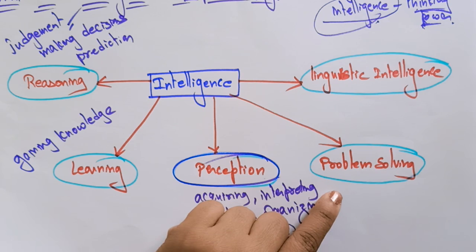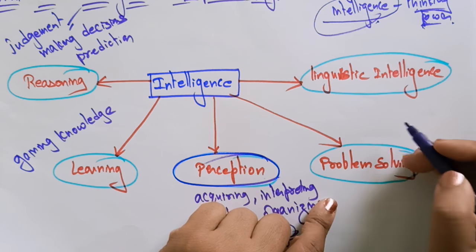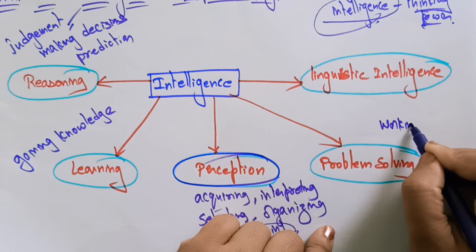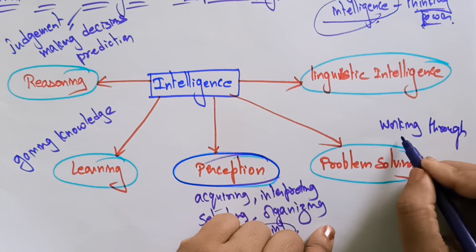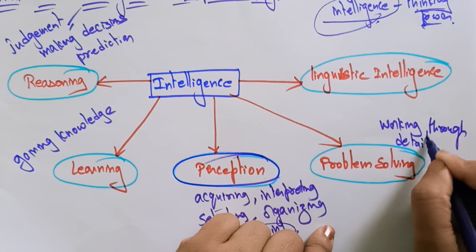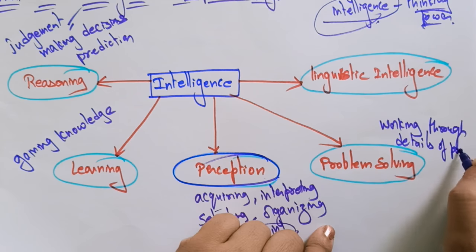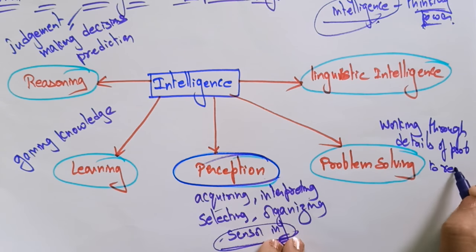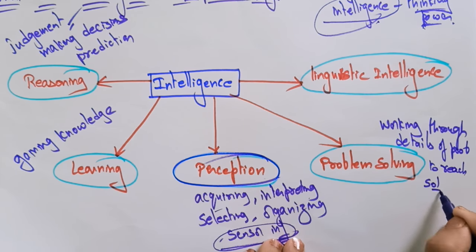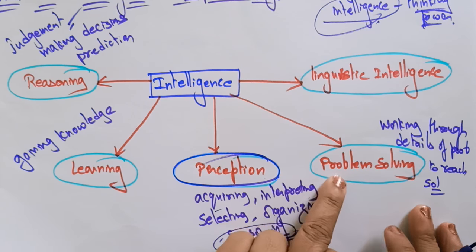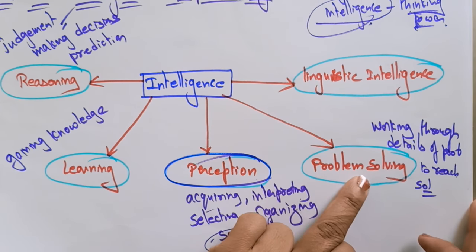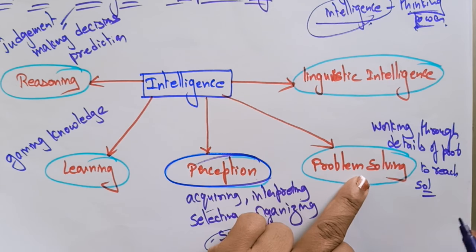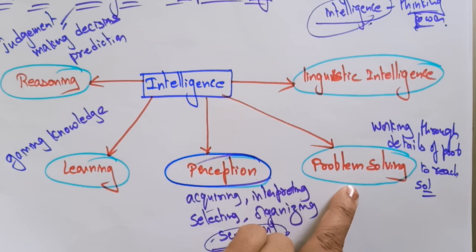Now coming to the next one: intelligence is composed of problem solving. Problem solving is a process of working through the details of a problem to reach the solution. That is what problem solving means — working through the details to reach the solution. It also includes decision making.